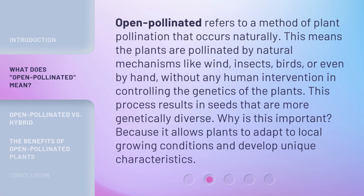Open pollinated refers to a method of plant pollination that occurs naturally. This means the plants are pollinated by natural mechanisms like wind, insects, birds, or even by hand, without any human intervention in controlling the genetics of the plants. This process results in seeds that are more genetically diverse. Why is this important? Because it allows plants to adapt to local growing conditions and develop unique characteristics.